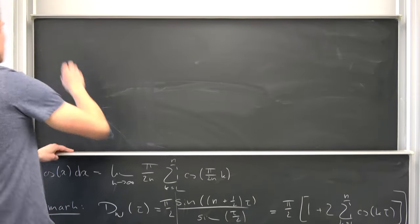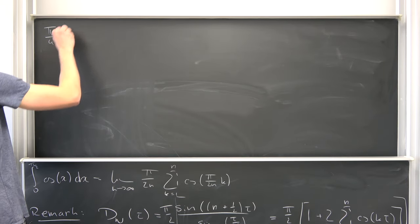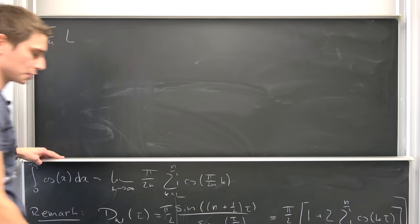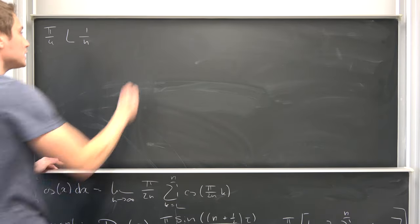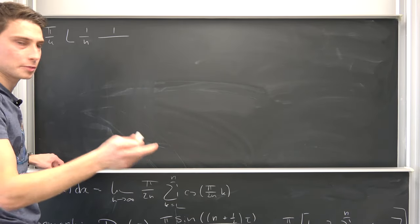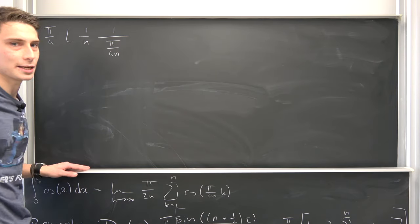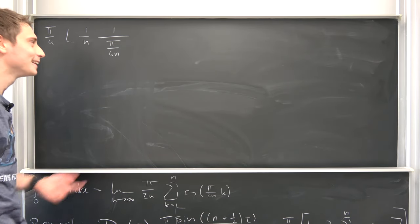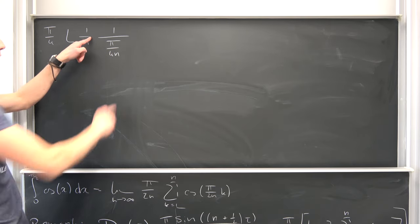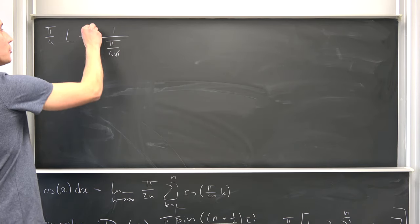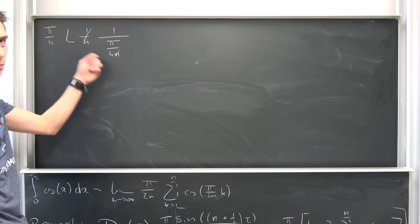So we are going to get pi over 4 times the limit as n approaches infinity of 1 over n still, and then we have 1 over the argument of the sine, which is nothing but pi over 4 times n. You see, 1 over n and 1 over n is going to cancel out. So we are going to take the limit of a constant.